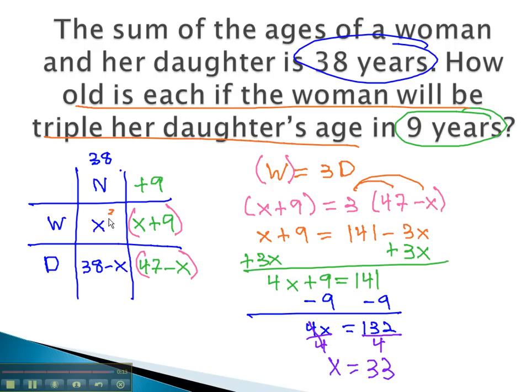x, or the woman, is 33. The daughter is 38 minus 33, or 5. The woman is 33, the daughter is 5.